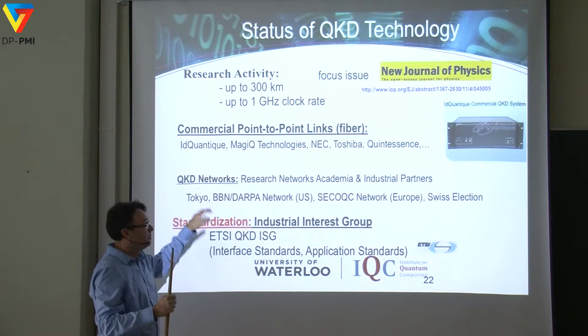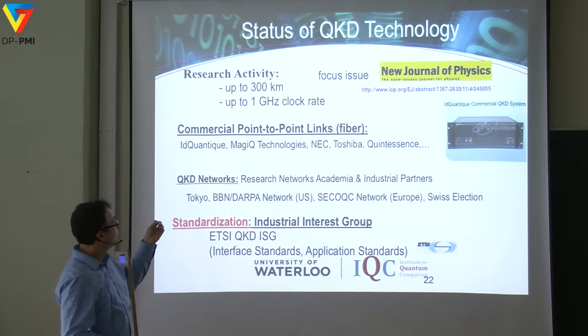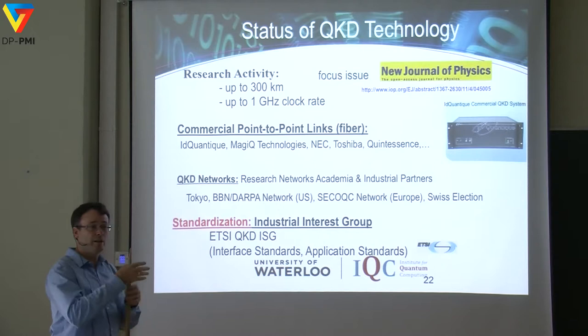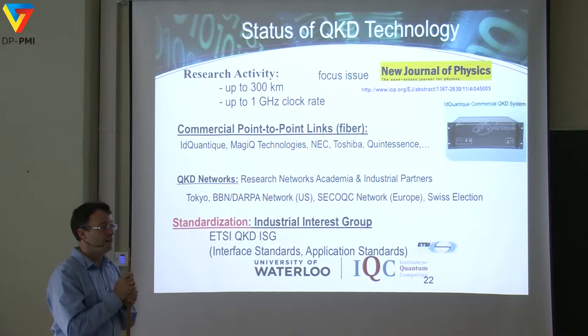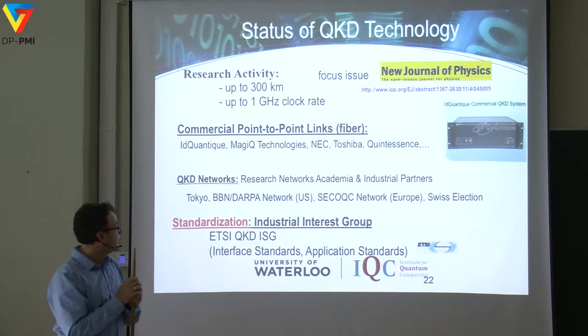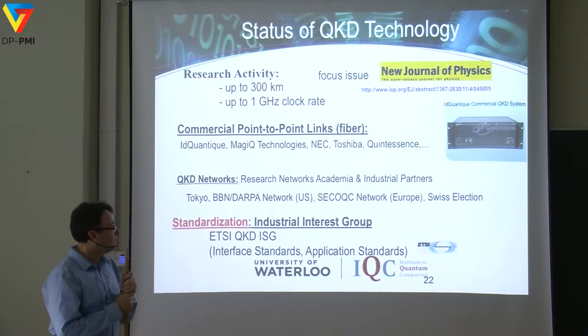The latest QKD city network was in Tokyo in 2010. The newest type of activity is long-distance trusted node repeaters. One is being done by a group in the U.S. — an industrial partner of ID Quantique — working on a 700-kilometer link around the Washington D.C. area, planning a trusted repeater node across the United States. There has also been an announcement from Chinese groups about a 2,000-kilometer trusted node link connecting Shanghai and Beijing.